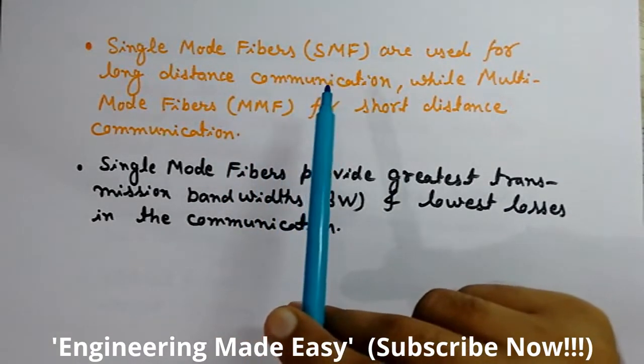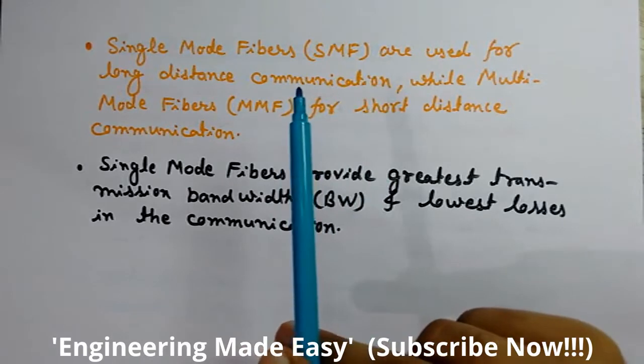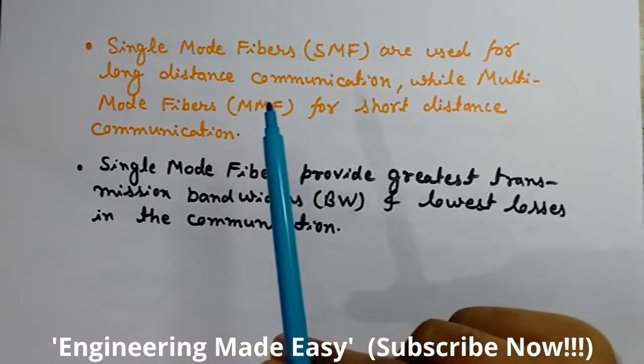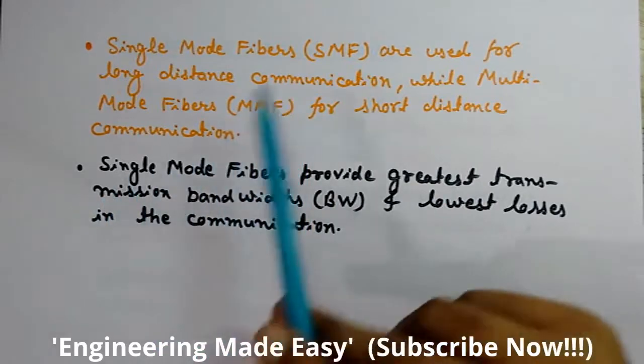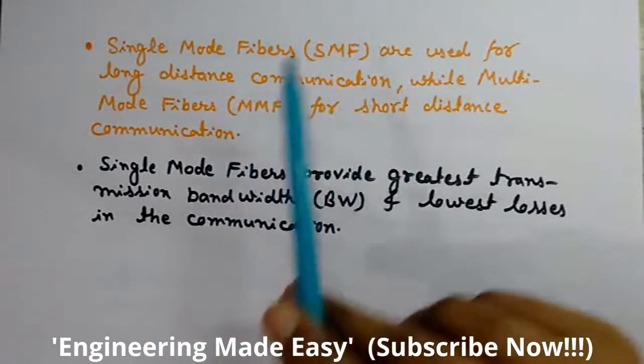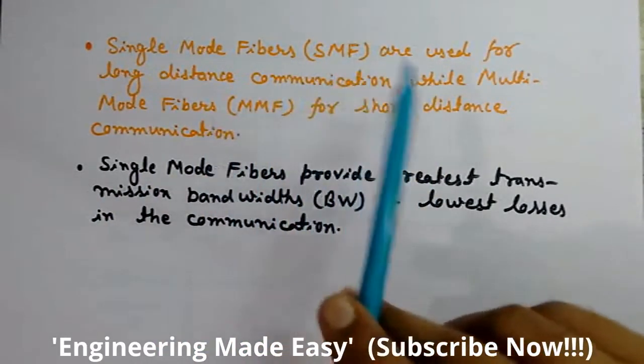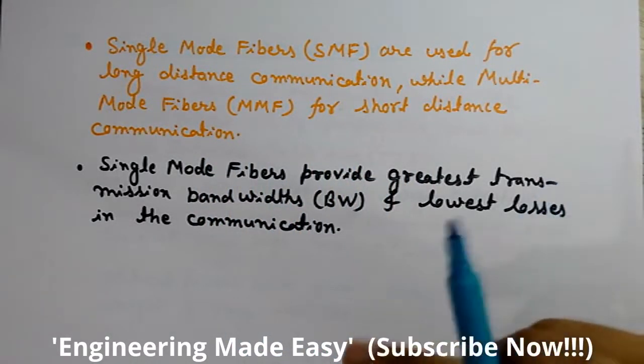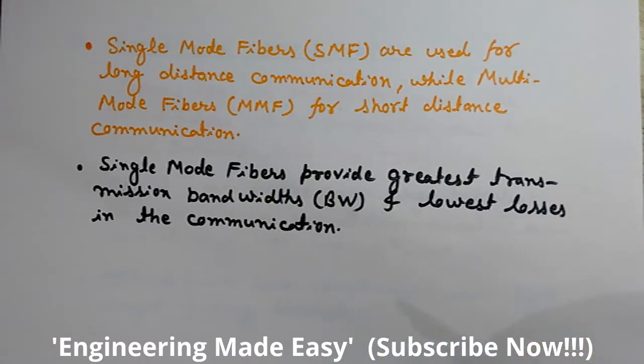Intermodal dispersion means since in case of multimode fibers we have lots of light rays, various light rays propagate simultaneously inside the core, so they interfere with each other. They broaden - we will see it in the dispersion topic.